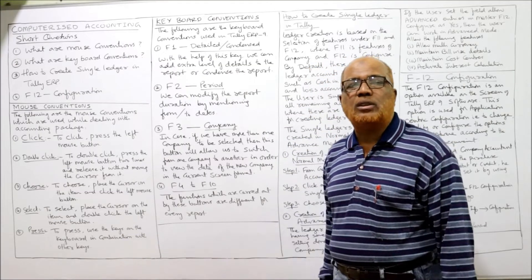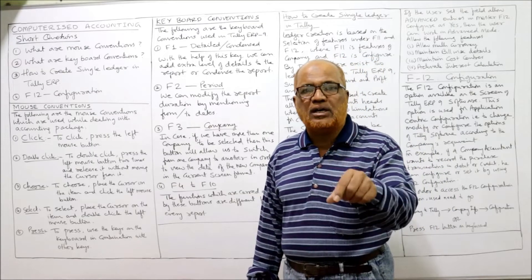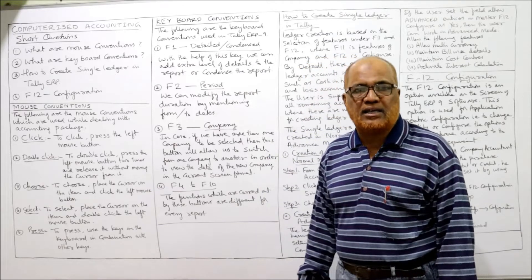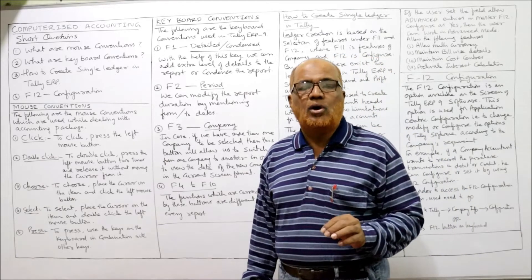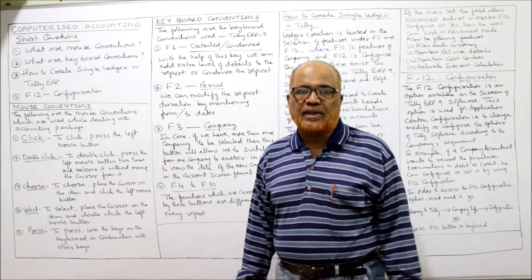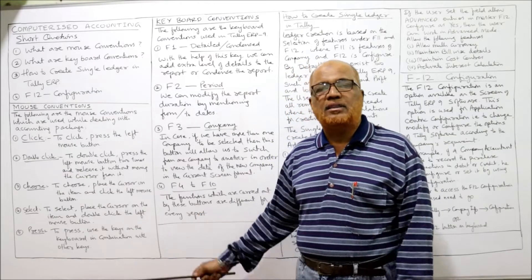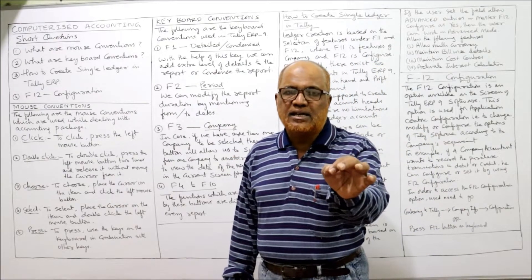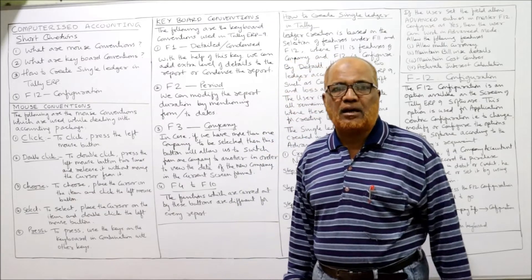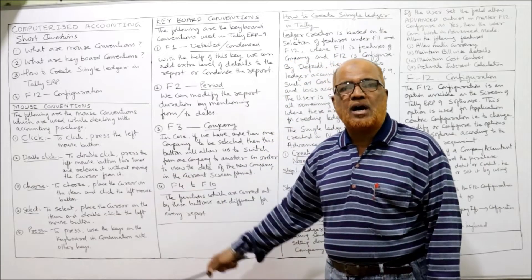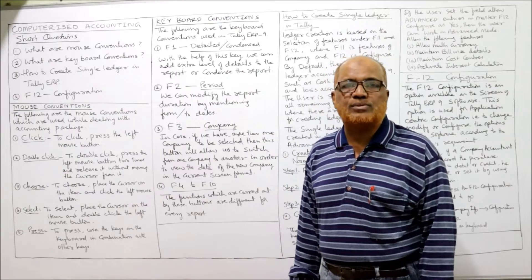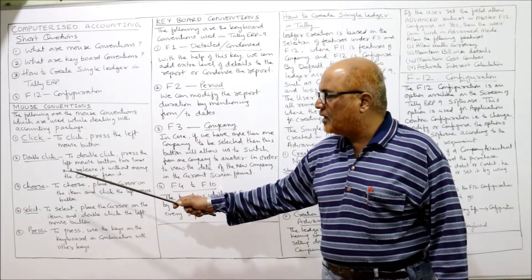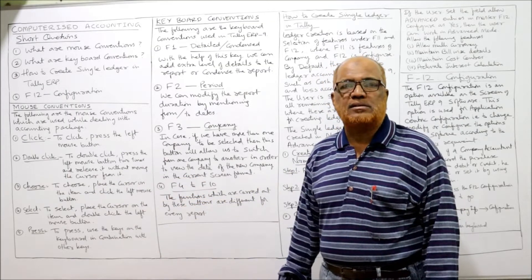Press means to use the keys on the keyboard either singly or in combination with any other key — for example, Ctrl plus another key or Alt plus another key. That combination is called press. So these are the mouse conventions: click, double click, choose, select, and press. This topic was asked as a short question in previous examinations.